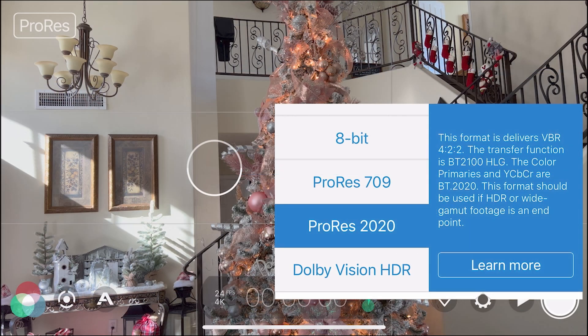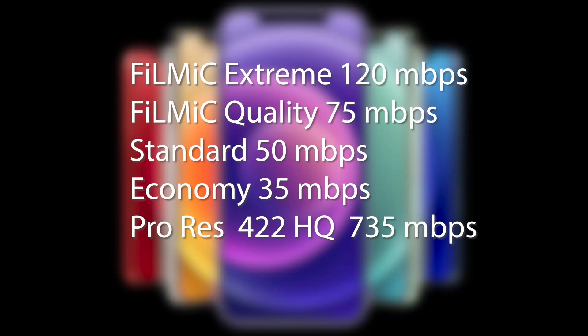ProRes has its own video explanation coming up after this video. Here we can see that Filmic Extreme has 120 megabytes per second, Filmic Quality 75 megabytes per second, Standard 50, Economy 35, and ProRes 422 HQ is a massive 735 megabytes per second.